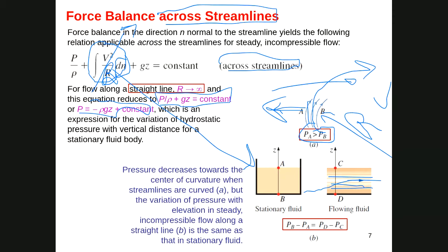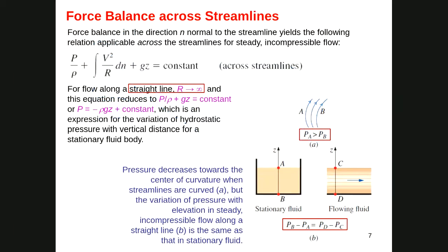When radius r is infinity — meaning the radius is so large the path is essentially a straight line — the equation gives a result similar to the static head: ρgz. This is very similar to ρgz from hydrostatics. Whether the fluid is moving or static, the pressure difference between points at different heights is governed by the hydrostatic pressure formula, since this particular form considers only elevation z.